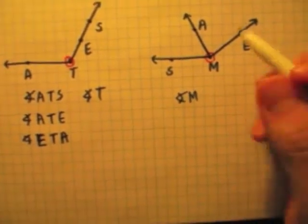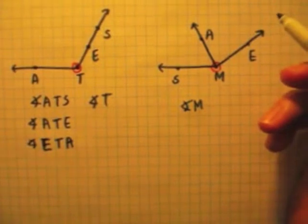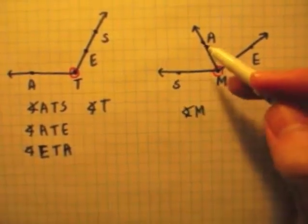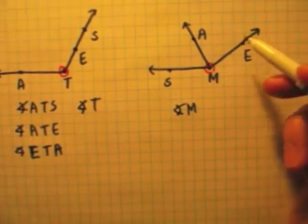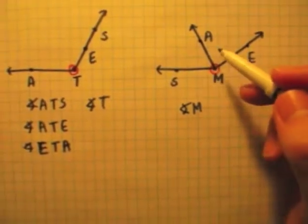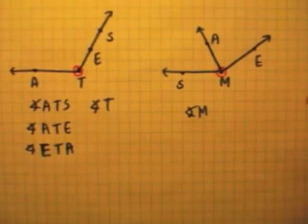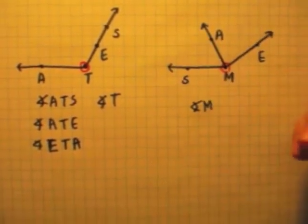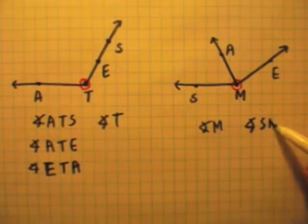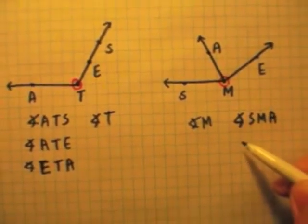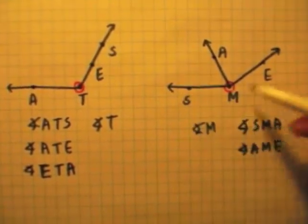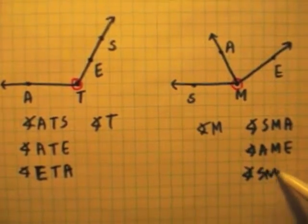There are two angles sharing this vertex, so I cannot just call this angle M, because then you'd confuse the reader — which angle M are you talking about? Are you talking about angle SMA or angle AME? In this particular case, if the vertex is part of more than one angle, you need to stick with three letters. So I can say angle SMA, angle AME, or if I want to talk about the whole angle, I would say angle SME.